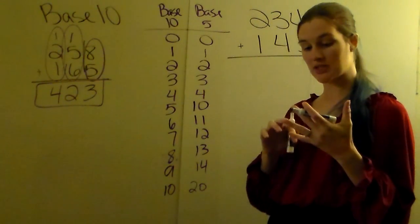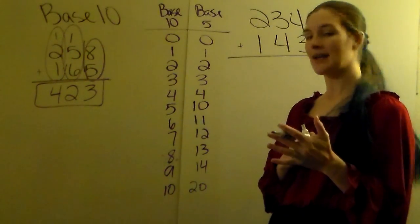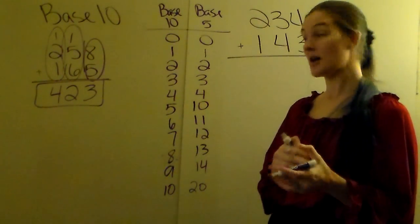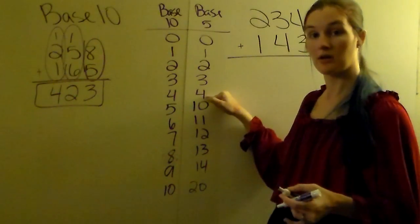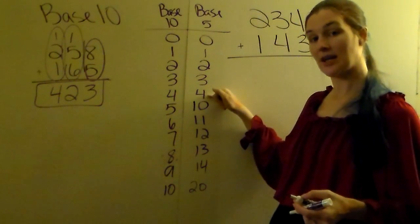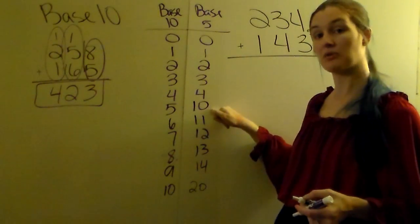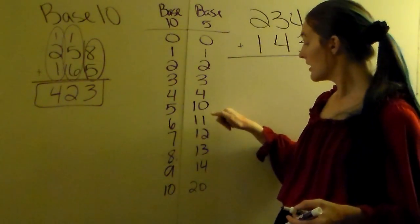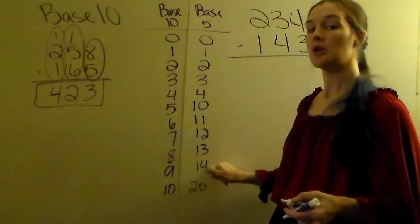You're not allowed a 5, 6, 7, 8, or 9. So when we hit 4, you can't put a 5, a 6, a 7, an 8, or 9. They're not allowed in base 5. So the next number you're allowed to use is 10, 11, 12, 13, 14.